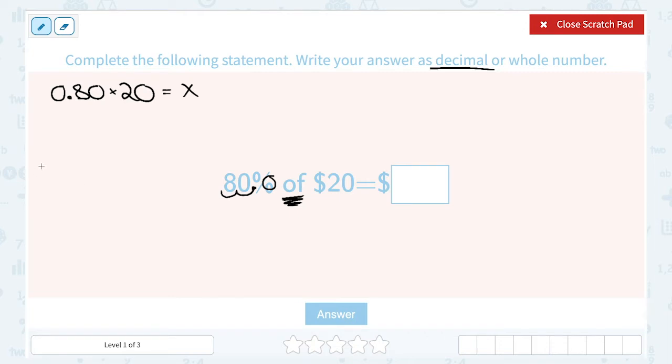And then we're going to see what we get for our missing number, which we can call x. And if you multiply 0.8 times 20, that gives us 16.